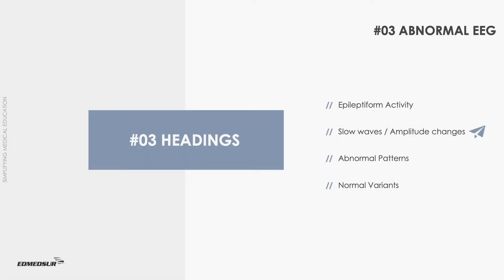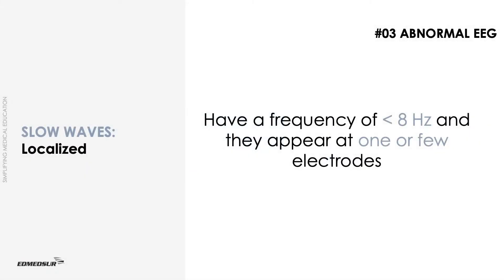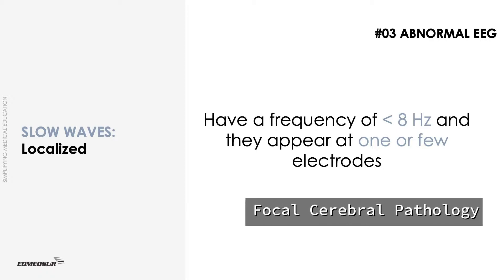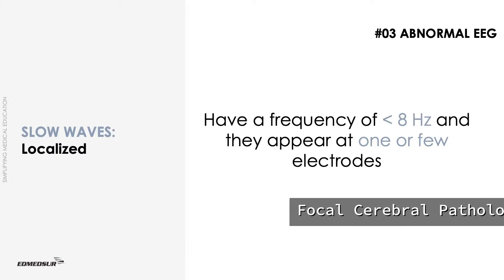In this video, we will discuss slow waves and amplitude changes. Slow waves of clinical significance may be either localized or generalized. Localized or focal slow waves have a frequency of less than 8 Hz and they appear at one or a few electrodes. Focal slow wave activity on the EEG is indicative of focal cerebral pathology of the underlying brain region.